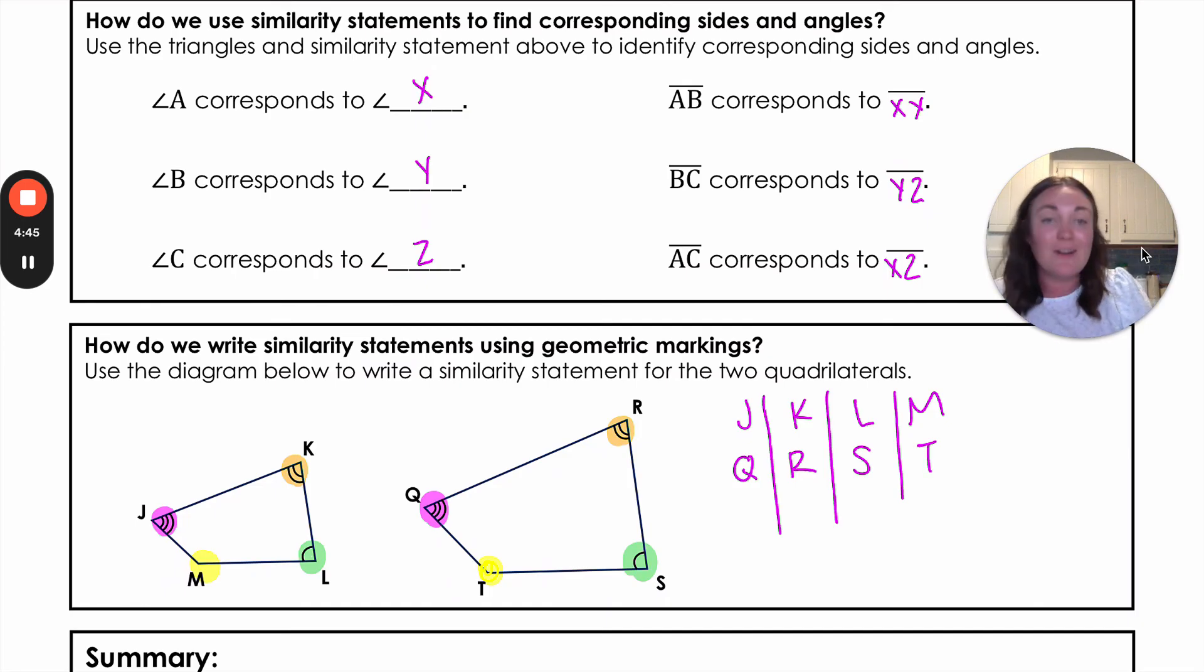If I was going to write this similarity statement out, I would write JKLM is similar to QRST. And that is how we use similarity statements and we identify corresponding angles and sides of similar figures. I hope you have a great day and I will see you next time.